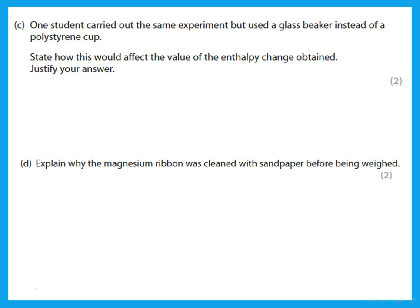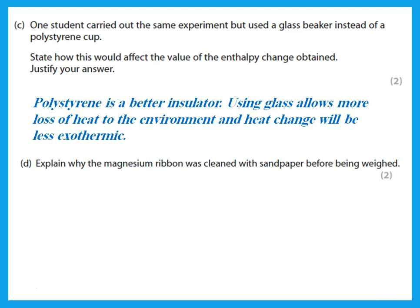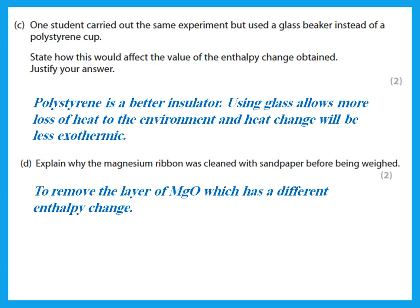One student carried out the same experiment but used a glass beaker instead of a polystyrene cup. Polystyrene is an insulator, so using glass allows more heat loss to the environment, making the heat change appear less exothermic — the magnitude of ΔH will be a smaller number. As for why the magnesium ribbon was cleaned with sandpaper: it removes the layer of magnesium oxide on the surface, which would give a different enthalpy change.